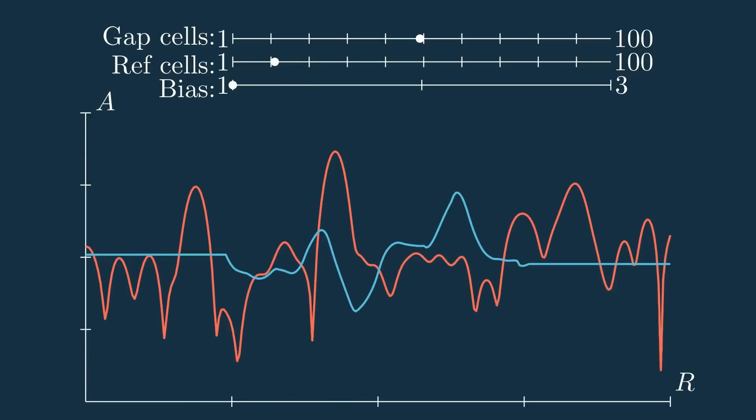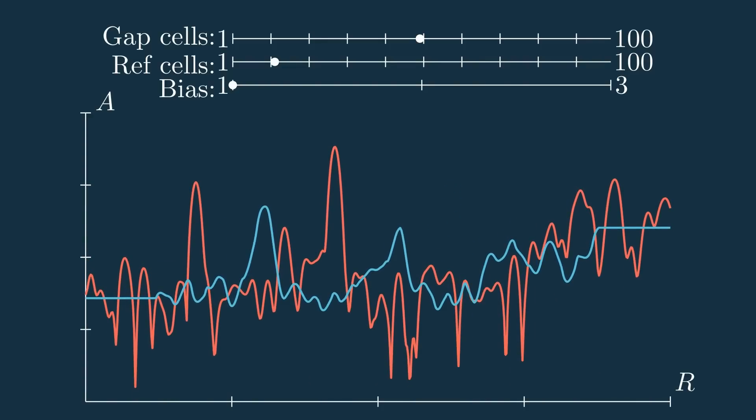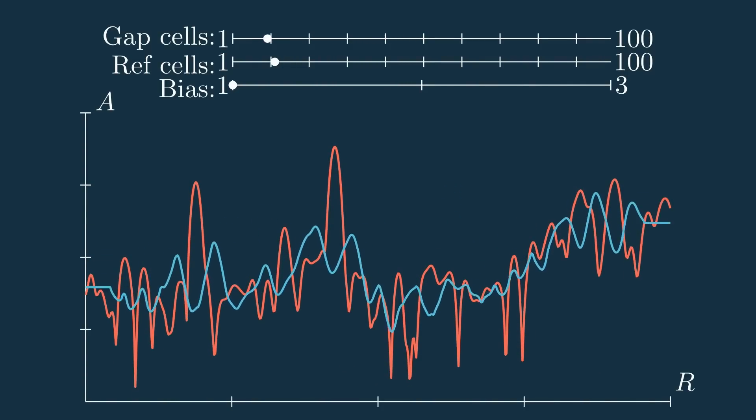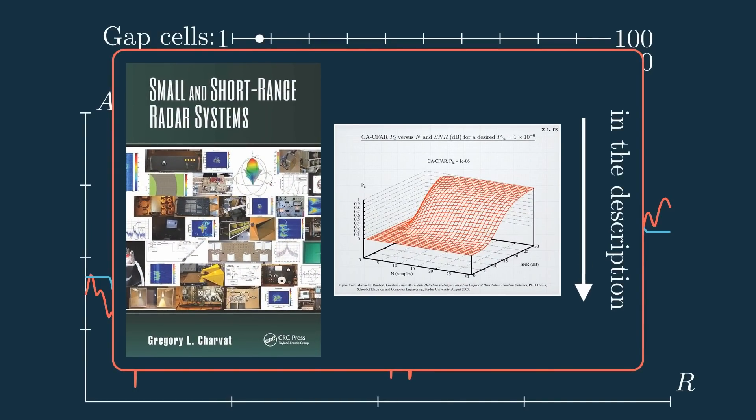But in the example of a human, the targets would be narrower, and fewer gap cells would probably suffice. And you may have to play around with this some, but there's also some resources in the description that provide some more definitive ways to determine this.